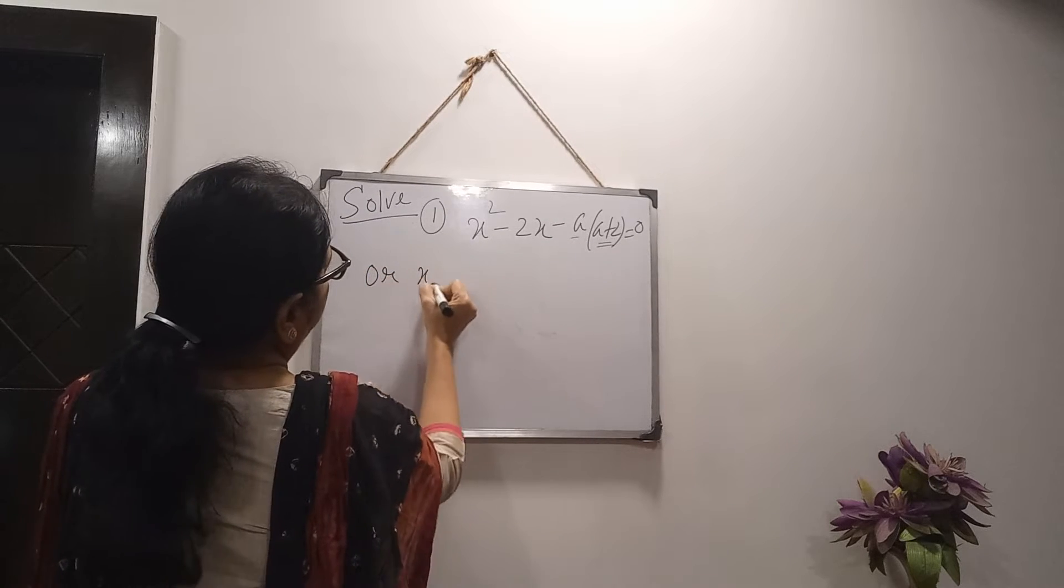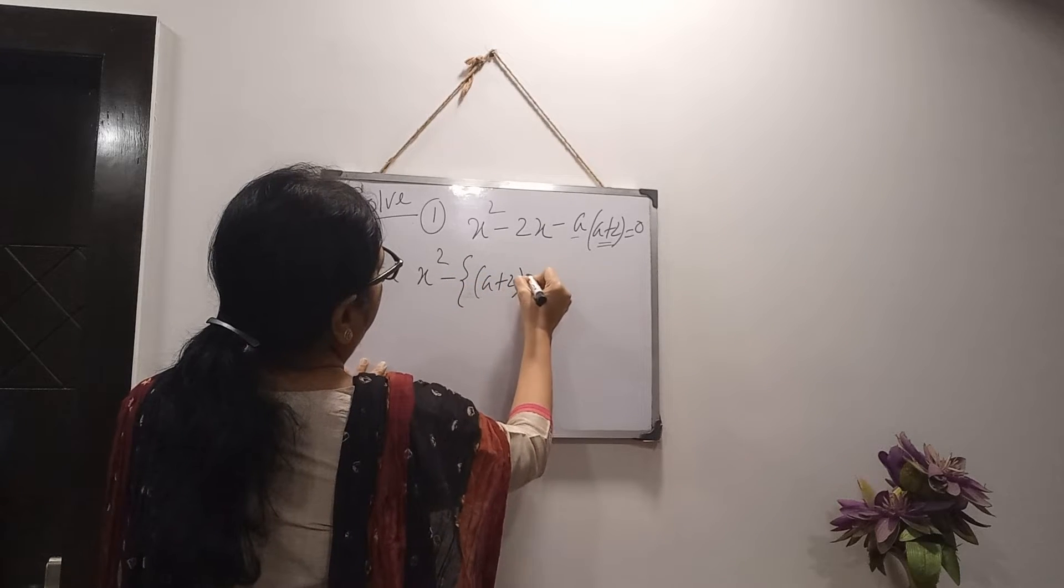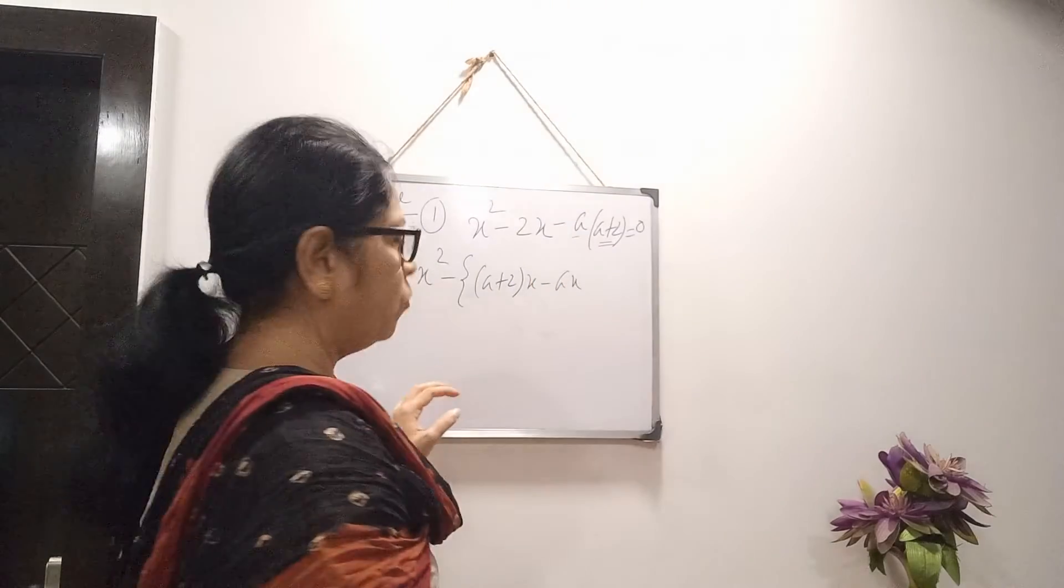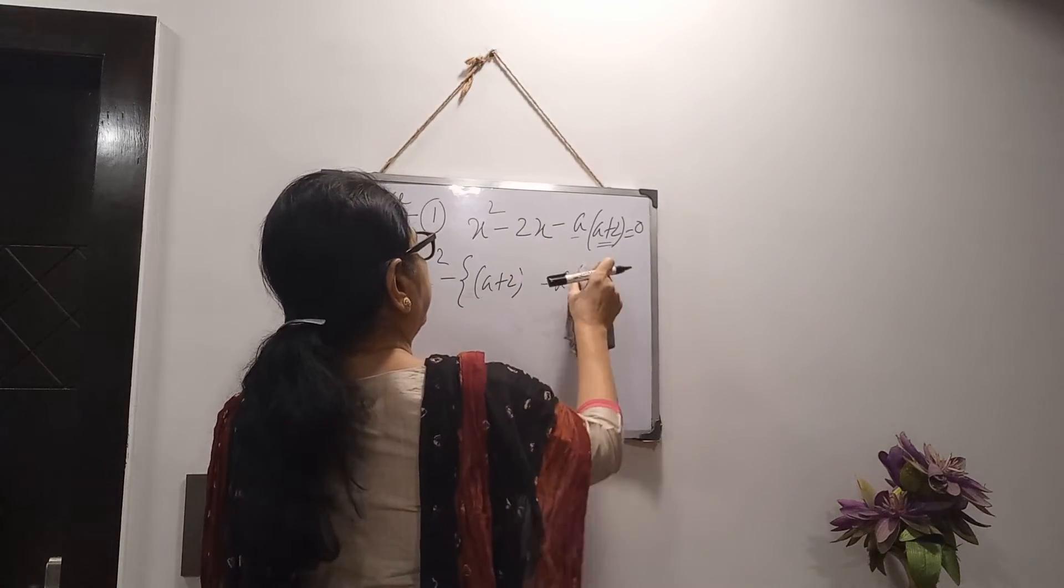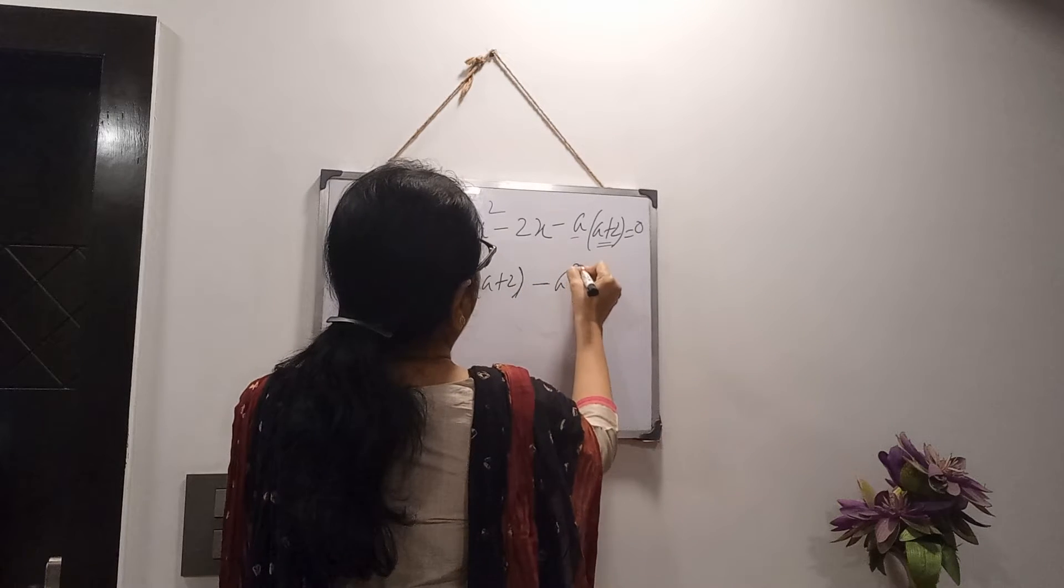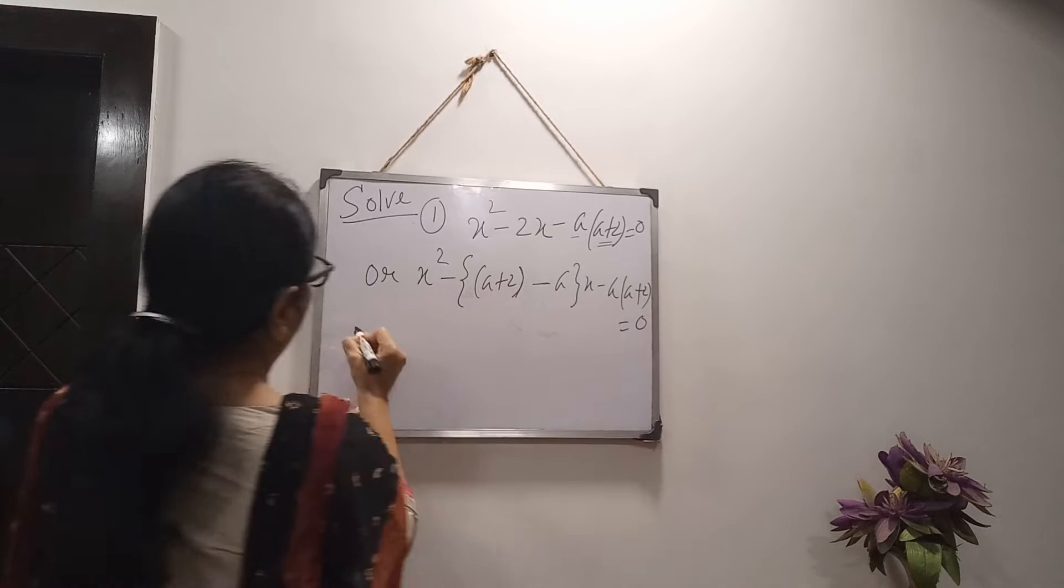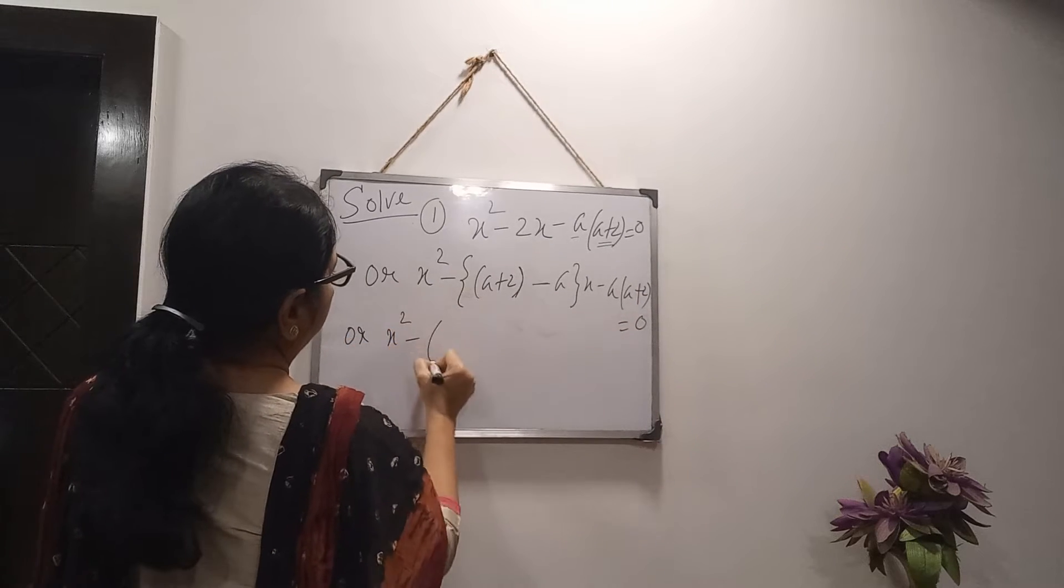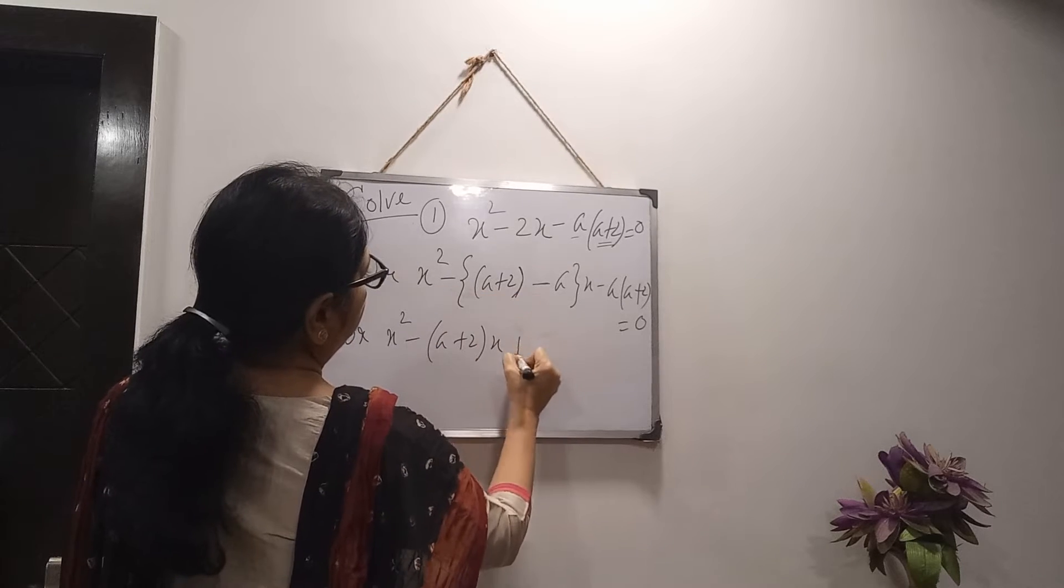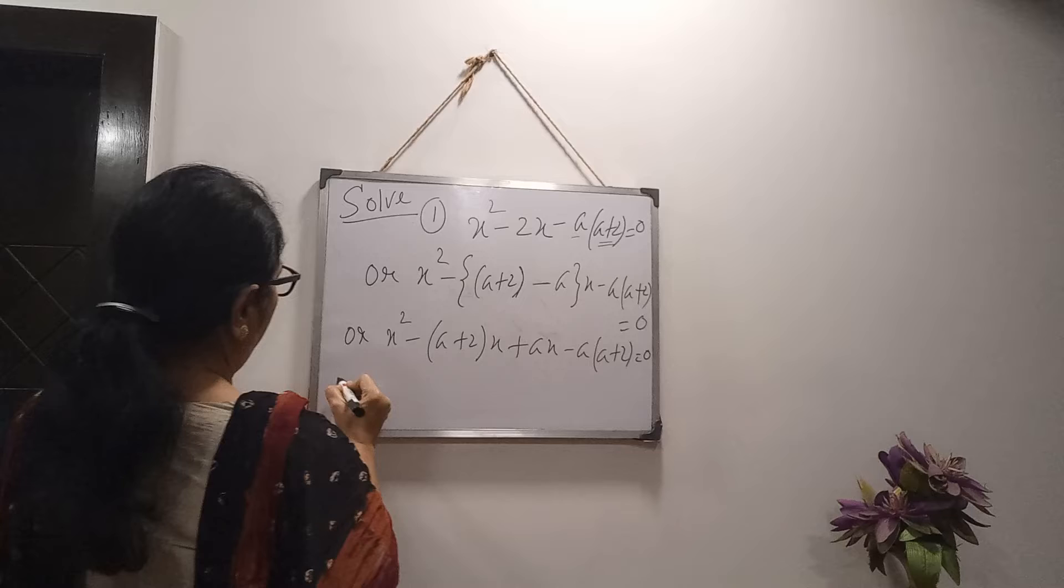For x square minus a common, then give bracket a plus 2x minus ax. Or, if you want, in first step, you can write x outside of the bracket. Minus a, then minus a, a plus 2 equals to 0. Then, open the bracket. x square minus a plus 2x. Minus, minus here. Plus x minus a into a plus 2 equals to 0.